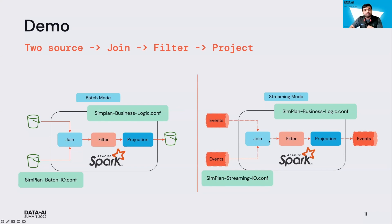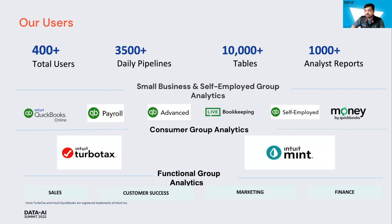To recap: we passed the same business logic with either a batch IO or streaming IO configuration file, and were able to run it in both modes. To give context on how Simplan is used within Intuit: we have close to 400 active users, running close to 3,500 daily pipelines, affecting close to 10,000 tables on a day-to-day basis, feeding into close to 1,000 business-critical reports, serving essentially the whole of Intuit. To understand how we scale to these levels, please look up the scaling on Databricks talk at the Databricks Summit.